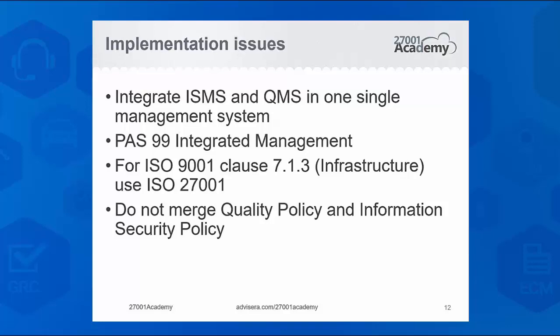Jorgis asks: must objectives be set for every control we implement? No, you do not have to do this. Especially smaller companies can define objectives for groups of controls, or simply define security processes and then set objectives for those processes. You don't need to go control by control or even by groups of controls. RegVic asks: how many times per year for management review sessions? Once a year is the minimum, although it is much better to do it more often.